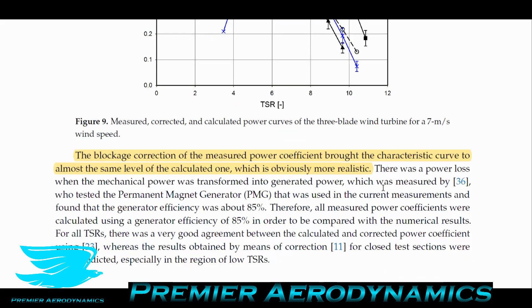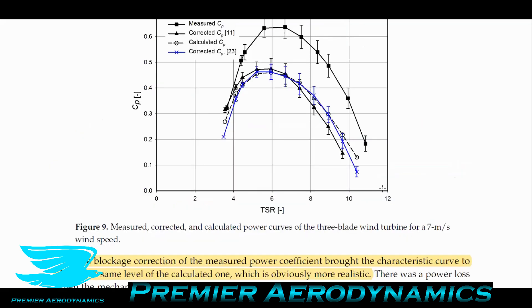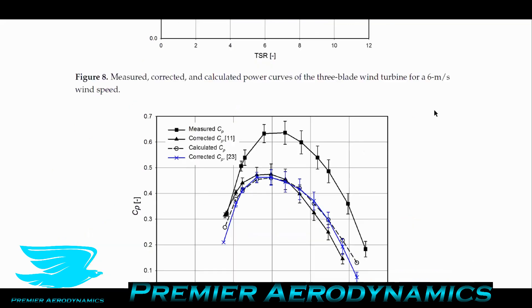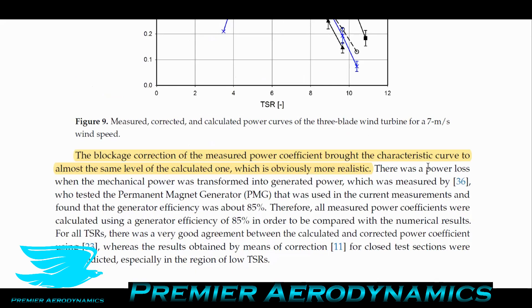The blockage correction of the measured power coefficient brought the characteristic curves to almost the same levels as the calculated ones, which is obviously more realistic than being above or close to the Betz limit. With their corrected power coefficients, they're still reaching over 45%, which is very good. The difference between 45% and the Betz limit of 60% is largely due to mechanical energy losses — you can't have 100% efficiency.